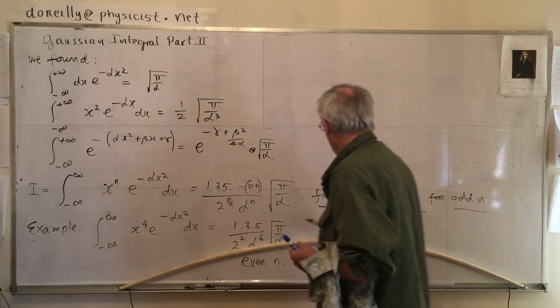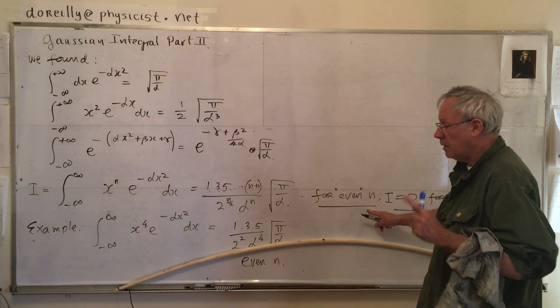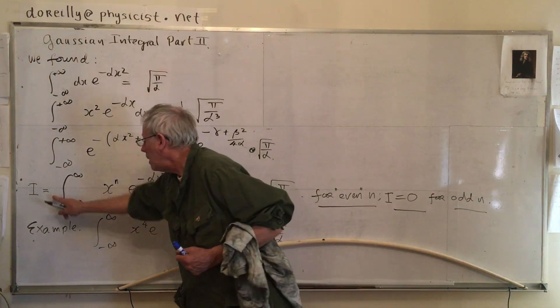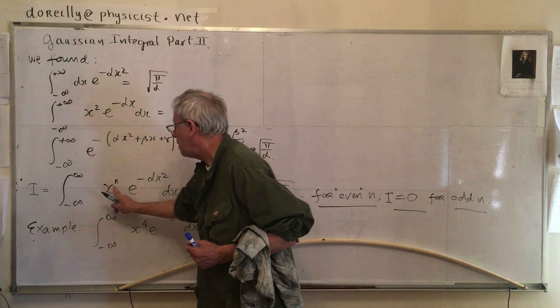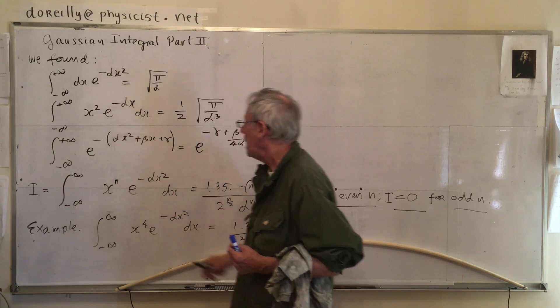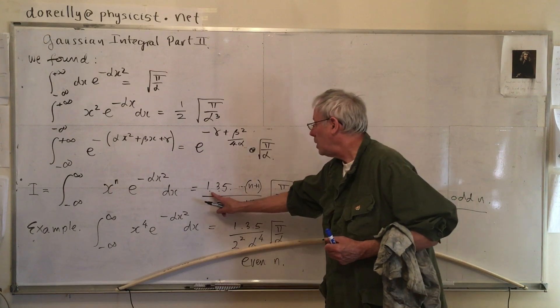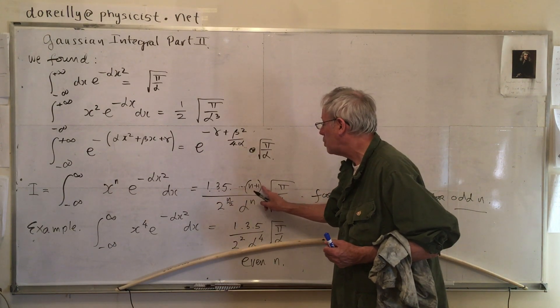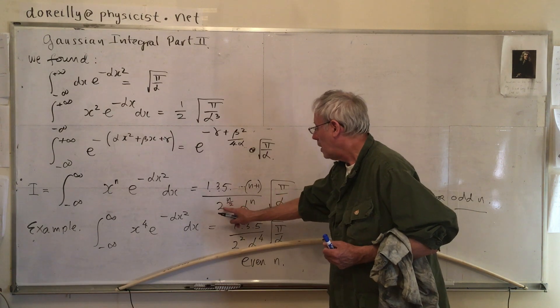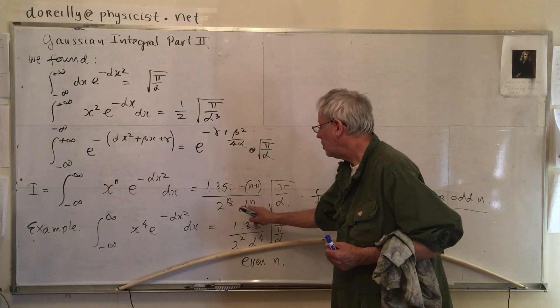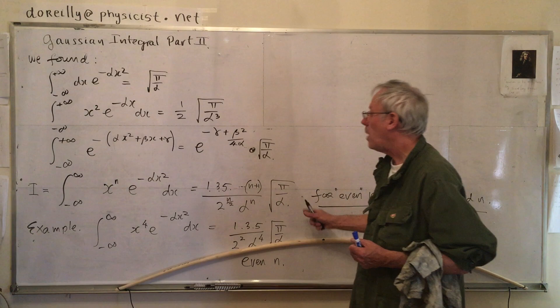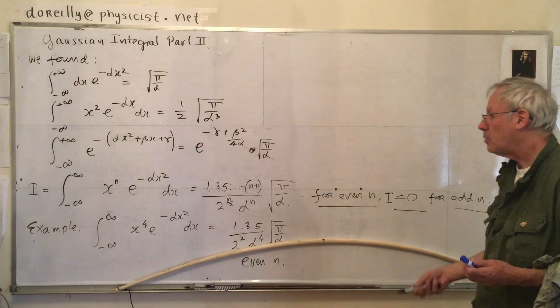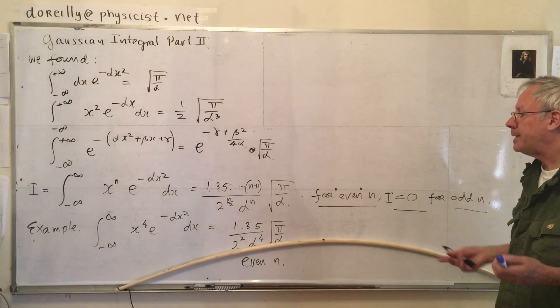Okay, for n even, only for even, the integral from minus infinity to infinity, x to the n, e to the power of minus alpha x squared dx, is 1 times 3 times 5 times all the way down to n minus 1, over 2 to the power of n over 2 alpha to the n, all times root pi over alpha. So, that's my little result. Some people write it a different way. That's the way I put it down.